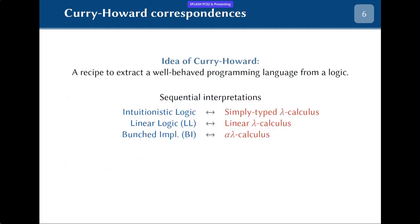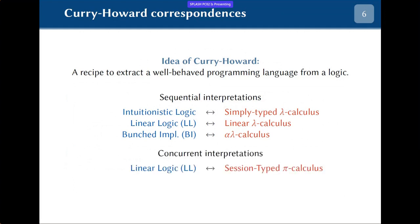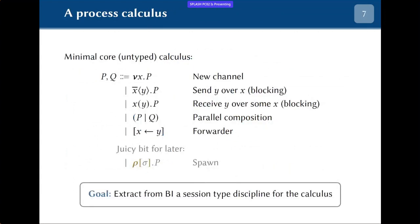This has generated a lot of nice results, the most classical of which are the sequential interpretations of various logics in various variants of the lambda calculus. What we are interested in is concurrent interpretations for the logics. I mentioned the interpretation for linear logic into a session type calculus, and what we do here is a similar story but for bunched implications — extracting type disciplines for a concurrent calculus for message-passing programs.